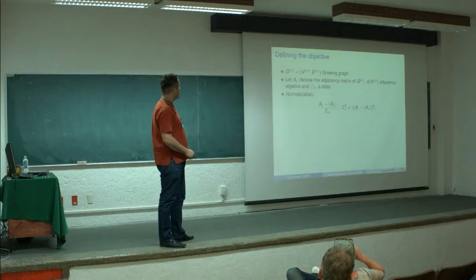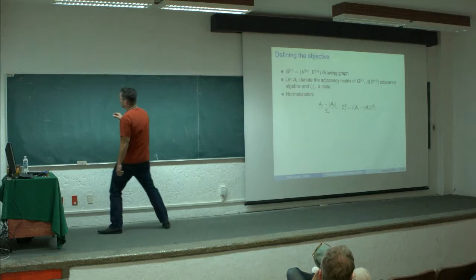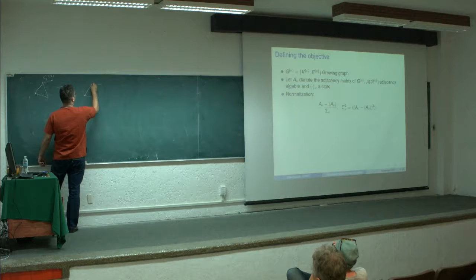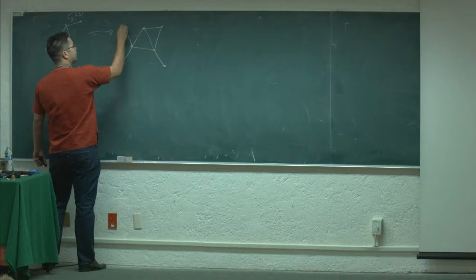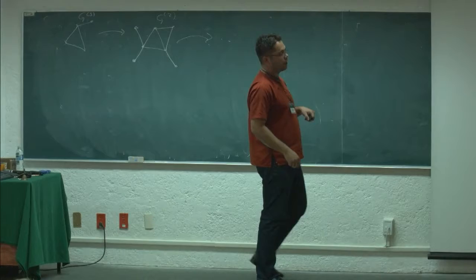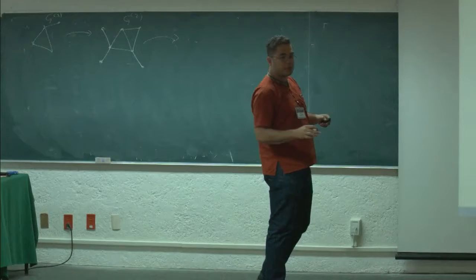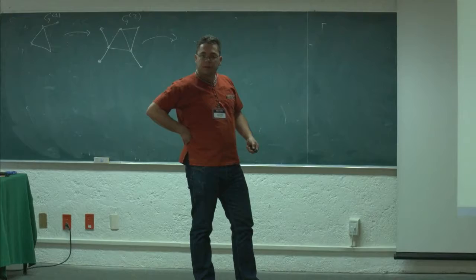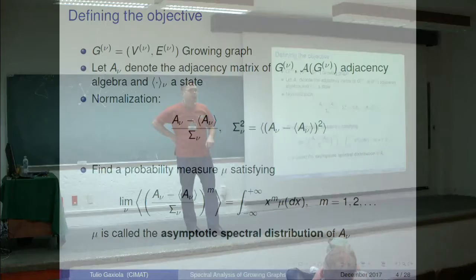if we take a growing graph, it means we have one graph G1, then another graph G2 where we can add edges and vertices, and so on. For each level, we associate the adjacency algebra and the state under normalization. We want to find a probability measure which has the same moments as the limit of this random variable. We call it the asymptotic spectral distribution of the graph or the adjacency matrix.